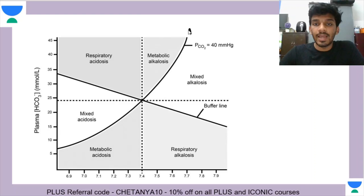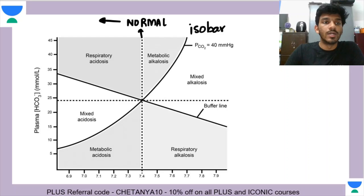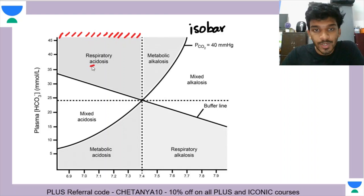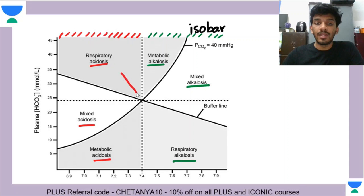Anything above the normal isobar is a condition where the partial pressure of CO2 is on the higher side. Taking normal pH as 7.4, everything towards the left of this will be acidosis because the pH is lower on that side — I'm representing acidosis in red. You can see respiratory acidosis, mixed acidosis, and metabolic acidosis. Everything towards the right of normal is alkalosis — I'm drawing that in green — so metabolic alkalosis, mixed alkalosis, and respiratory alkalosis.